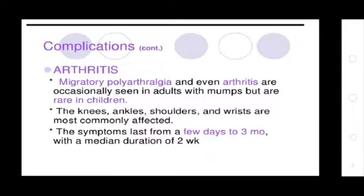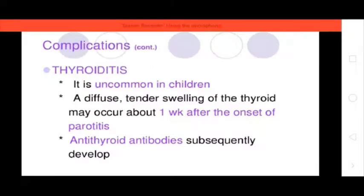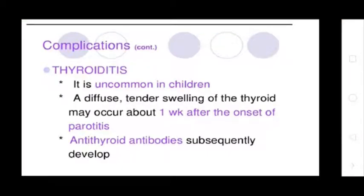Arthritis: Migratory polyarthralgia and even arthritis are occasionally seen in adult mumps but are rare in children. The knees, ankles, shoulders, and wrists are most commonly affected. Symptoms last from a few days to three months, with a mean duration of two weeks. Thyroiditis: It is uncommon in children. Diffuse swelling of the thyroid may occur one week after onset of parotitis, and thyroid antibodies subsequently develop.